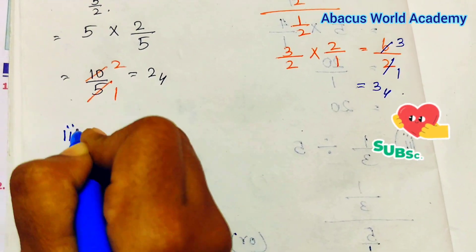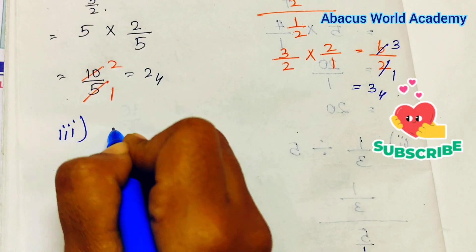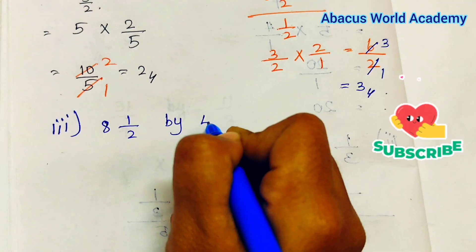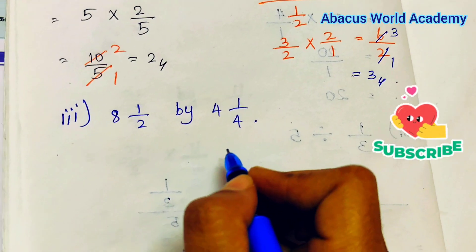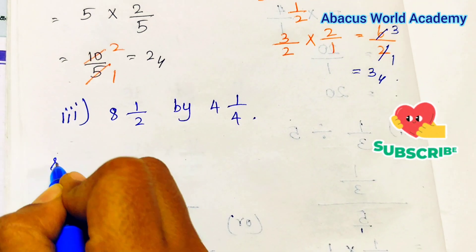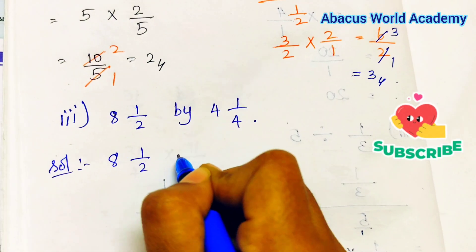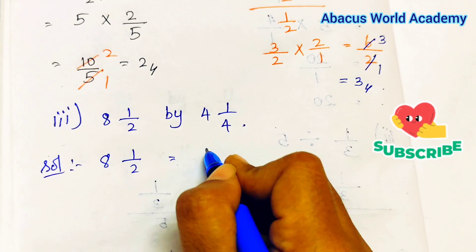Third one: 8 and 1/2 by 4 and 1/4. So now we will get the fraction of the solution. Solution: 8 and 1/2 is equal to 8, 2 is equal to 16. So 8 into 2 plus 1 by 2.